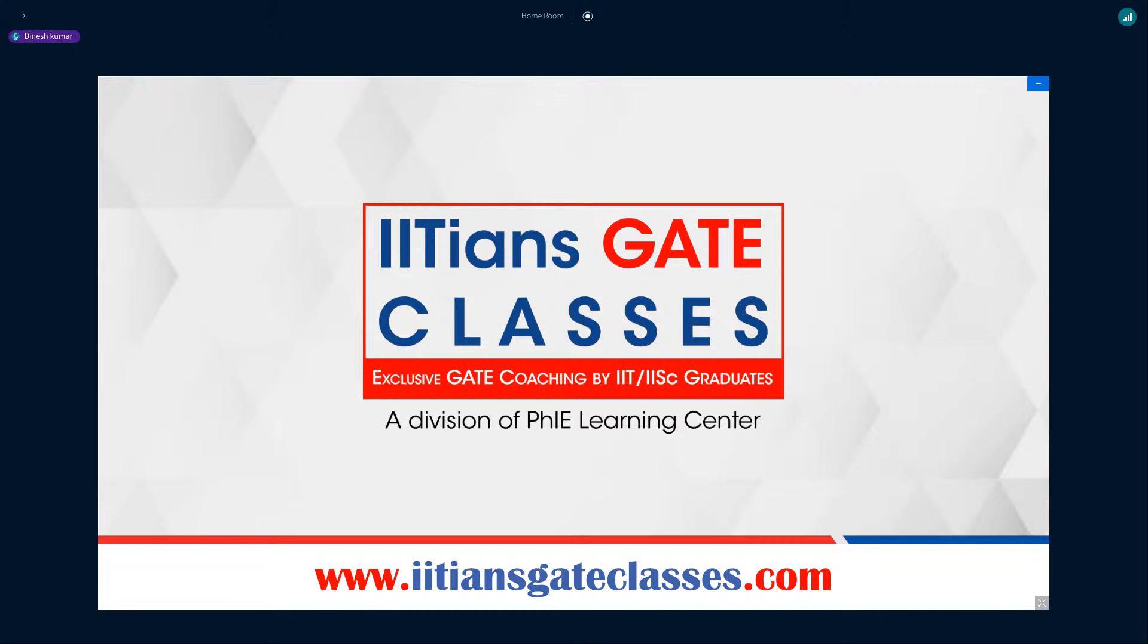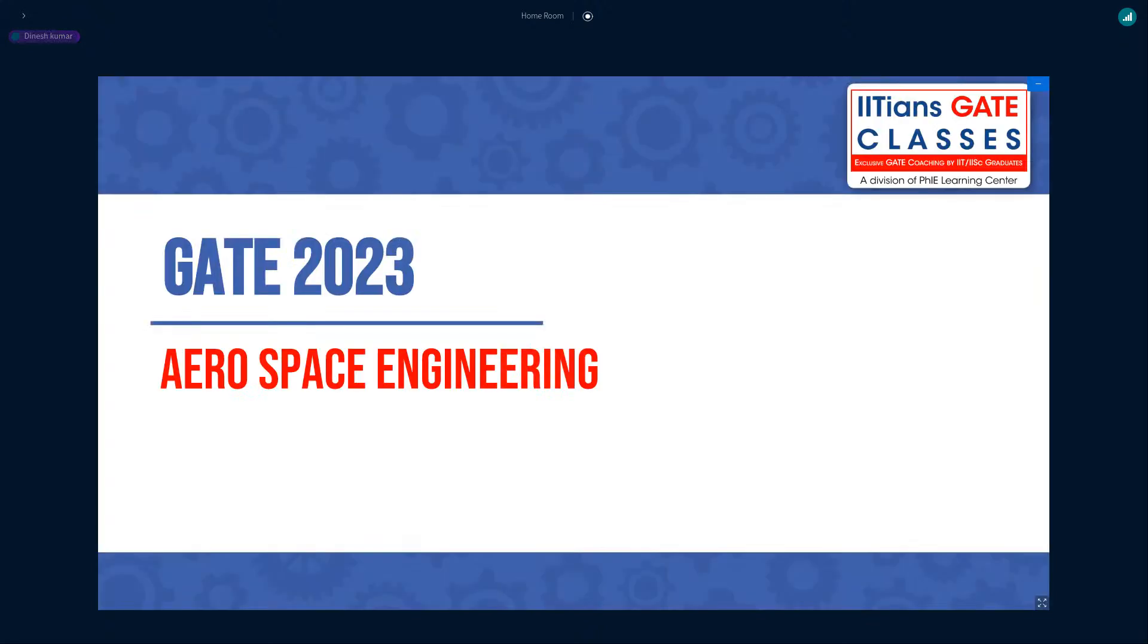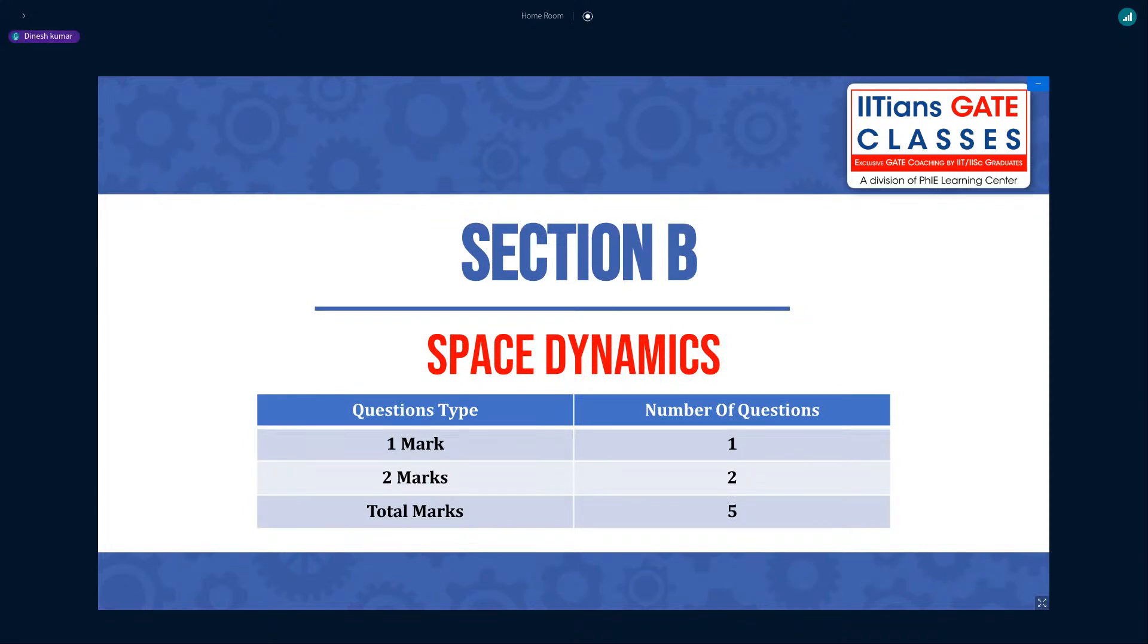Hello, welcome to IITians GATE classes. We are discussing GATE 2023 Aerospace Engineering Detailed Solution. In this session we will be discussing the questions asked in Space Dynamics. There are total three questions asked from Space Dynamics, which is usually more than previous years. In most of the years they ask one question, but this time three questions. One is for one mark and there are two questions for two marks. The total weightage is five marks.